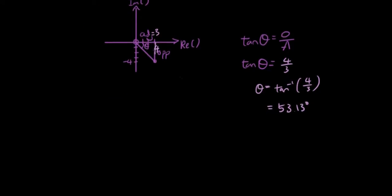And if you have a look, theta is from the real axis, the positive real axis going clockwise, so going downwards, which is the negative direction. So argument of z is equal to negative 53.13 degrees.